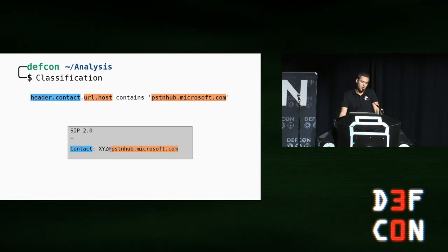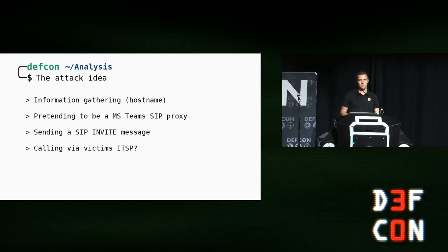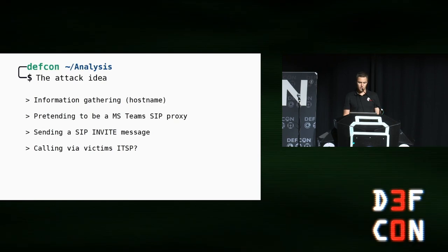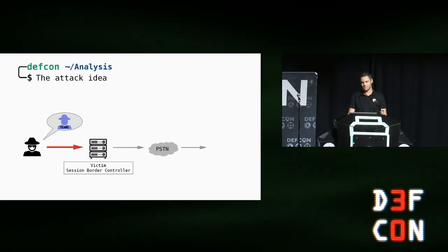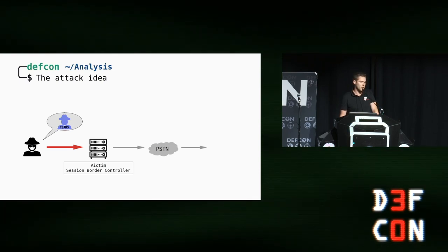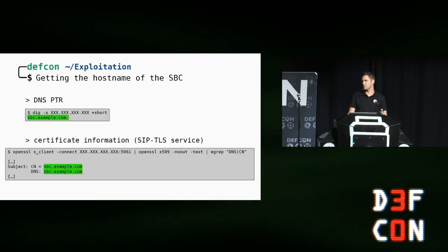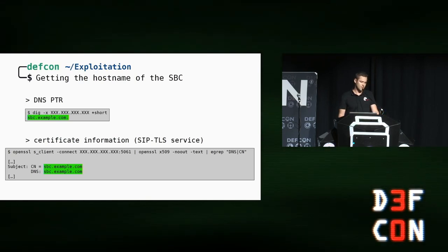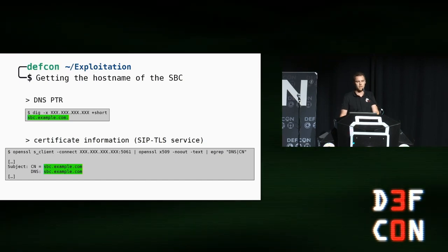At this point, I asked myself: is it possible to include the SBC's hostname inside the SIP message, send it to the SBC, and get correctly classified? Or in other words, we pretend to be Microsoft Teams and try to initiate an external phone call through the victim's telephone account. But for the successful attack, we need to know the fully qualified domain name of the SBC. This is a simple task. On the one hand, we can find out the SBC's FQDN if a valid DNS pointer entry exists. And on the other hand, the common name or subject alternative name values in the X.509 certificate of the exposed SIP TLS service can be extracted.